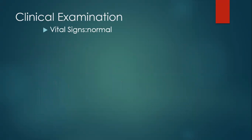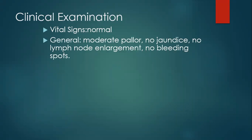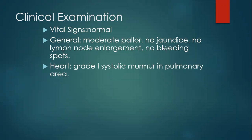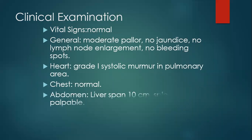In the clinical examination of this young female, her vital signs were normal — pulse, blood pressure, temperature, and respiratory rate. In the general examination, the patient had moderate pallor, no jaundice, no lymph node enlargement, and no bleeding spots. Heart examination revealed a grade one systolic murmur in the pulmonary area, mostly a flow murmur because of the anemia. Chest examination revealed normal vesicular breathing. Abdominal examination revealed normal liver span and the spleen was not palpable. Neurological examination was normal.